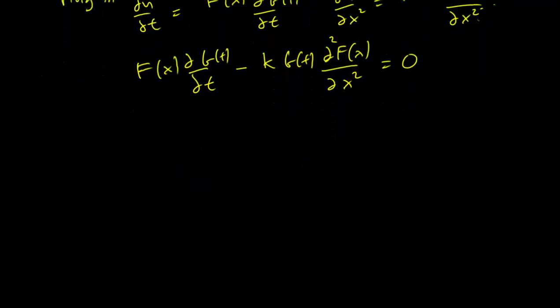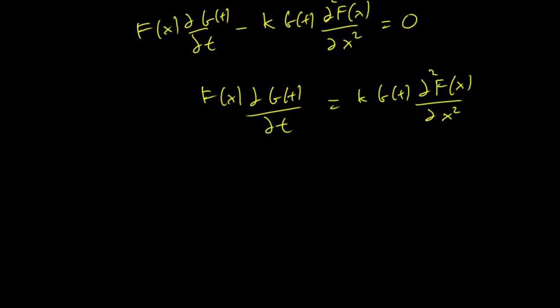So our goal is to move all the t's to the left and all the x to the right. This is similar to something we did in ODEs. So let's just first rewrite the equation this way. So we have two terms, one on the left side and one on the right side. So we move all the x terms to the right and all the t terms to the left.